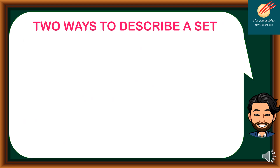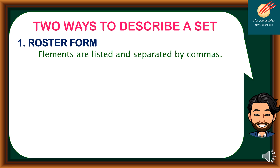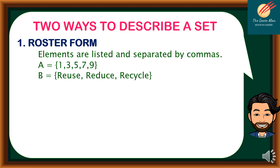There are two ways to describe a set. The first one is the roster form, which means elements are listed and separated by commas. For example, A = {1, 3, 5, 7, 9}. Also, set B = {reuse, reduce, recycle}. Remember that reuse, reduce, and recycle are elements of set B.